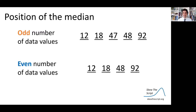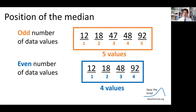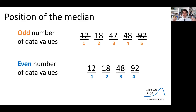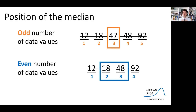Some subtleties about calculating the median: we have to find the position of the middle of a data set. For an odd number versus an even number of data values, you'll see different behavior. Here are two data sets — one with five values and one with four values. For the odd data set, cross out the extreme values until you reach a single middle value: 47 is the median. For the even data set, you're left between two central values, so you find the midpoint by adding those values and dividing by two. The midpoint between 18 and 48 is 33, so 33 is the median.